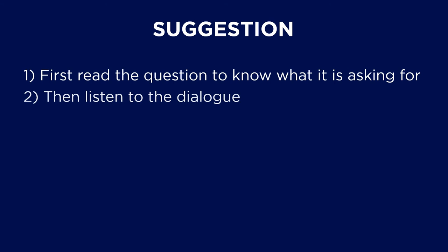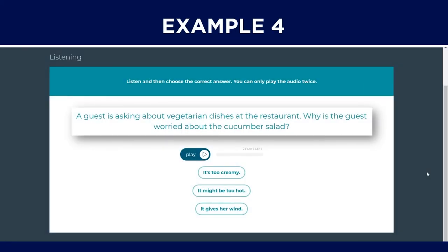This is because as you read the question first, you will have an idea of what to expect and to look out for. Then when you are listening to the dialogue, you can be extra attentive to the information that you are looking to pick up, rather than trying to hold on to every piece of information in the dialogue and risk forgetting bits and pieces later. At least when you have read the question first, you'll zoom in to what is needed. For example, a guest is asking about vegetarian dishes at the restaurant. Why is the guest worried about the cucumber salad?